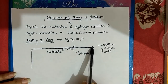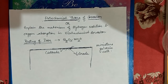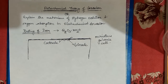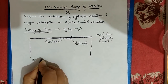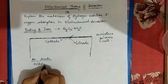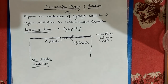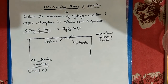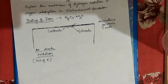One part becomes the anode and the other part acts as a cathode. At the anode, oxidation will always take place — you must always remember this. At the anode, oxidation takes place, and oxidation means loss of electrons.